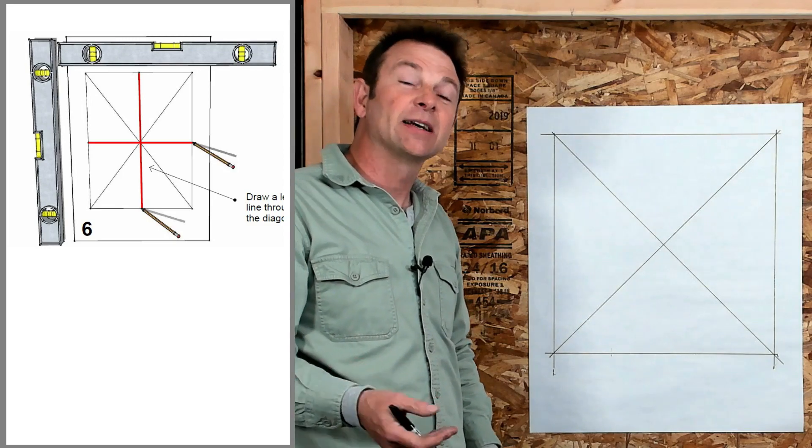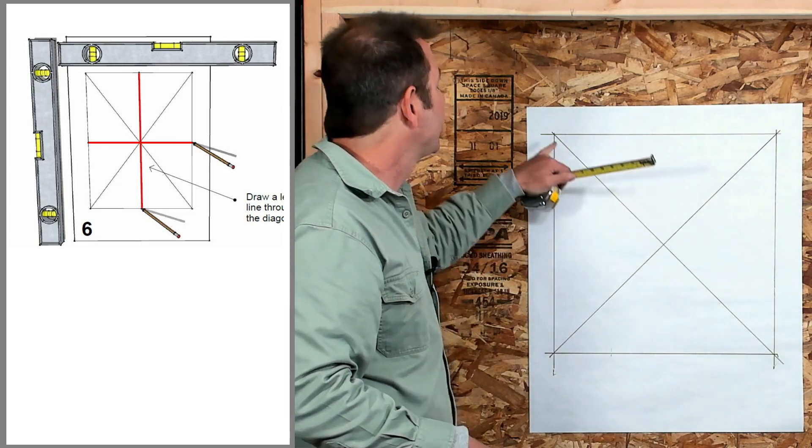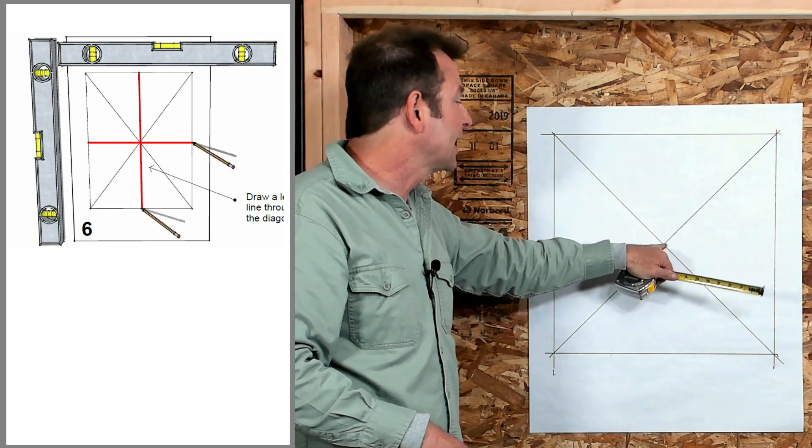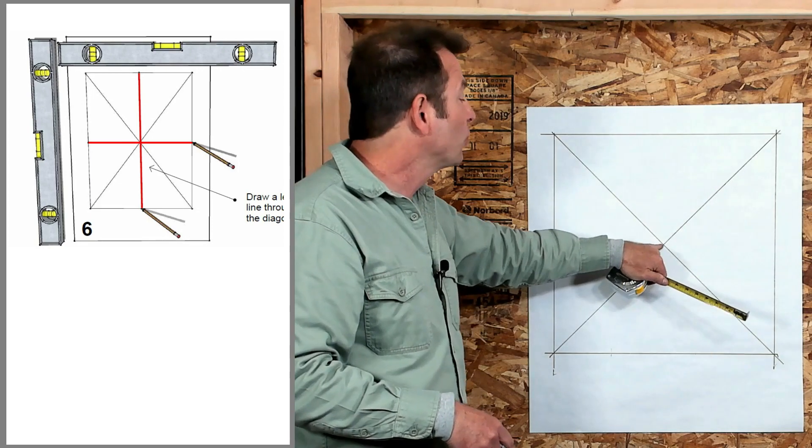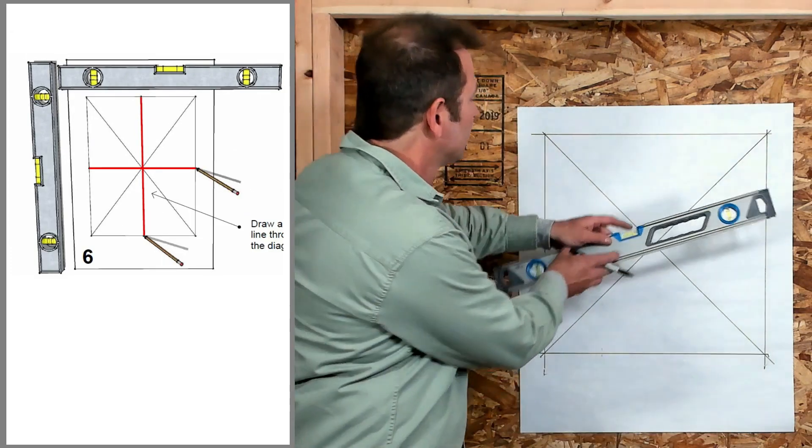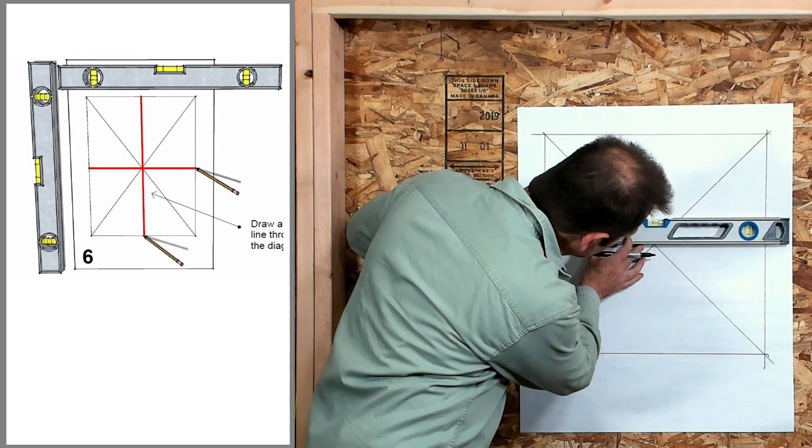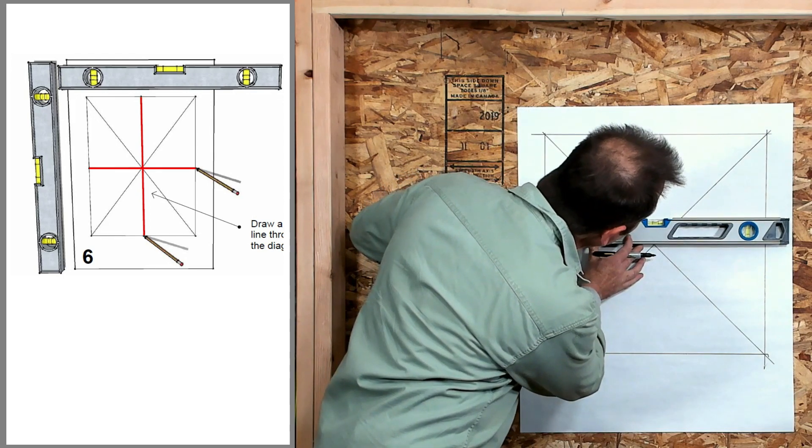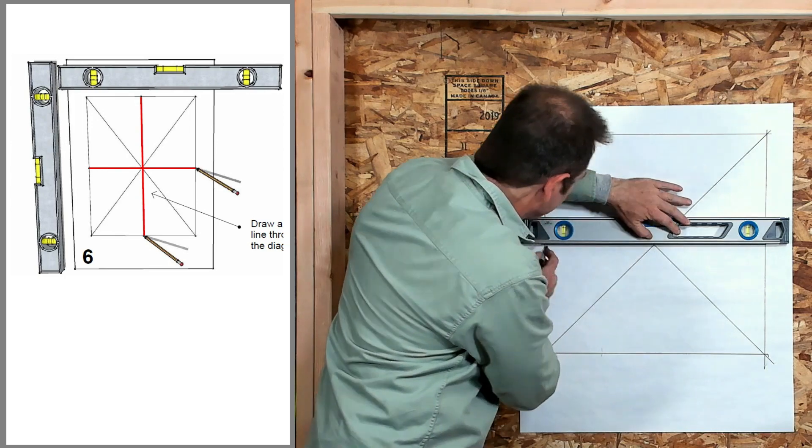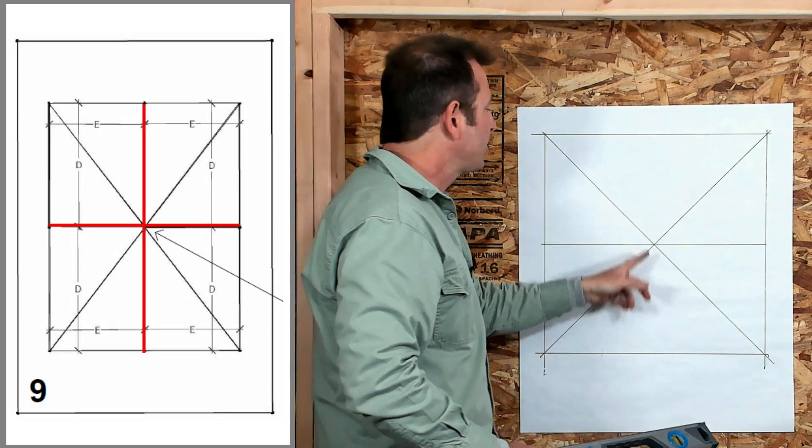The last steps for this rectangle are adding a vertical line and a horizontal line in the center. One other thing we know is that if this is a perfect rectangle and all of our corners are 90 degrees and both diagonals are equal, where they meet is the exact center of this rectangle. Let's draw a level line in the center. I'm going to lay my level on that point where those two intersect, adjust it so that I get my bubble right in the middle, and draw that line. Now we have a third level line parallel to the top and bottom lines.